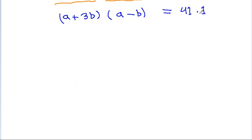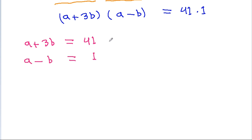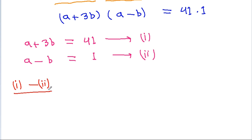Since a and b are natural numbers, the left-hand side is a product of two numbers, and the right-hand side is the prime number 41. So 41 can be written as a product of two numbers in only one way: 41 × 1. Since a + 3b > a - b, we get a + 3b = 41 (equation 1) and a - b = 1 (equation 2).